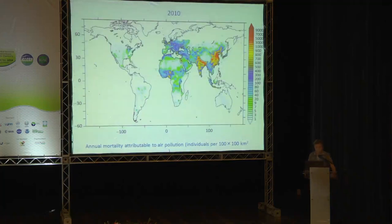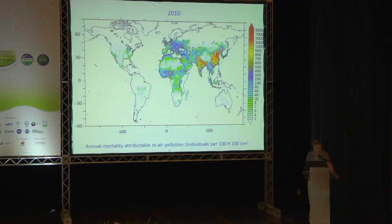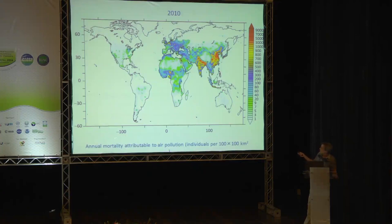On a global perspective for 2010, in units of individuals per 100×100 km grid square, most mortality related to air pollution is taking place in South Asia and East Asia — including Java, Indonesia — but also some areas in Africa, related to dust and biomass burning.